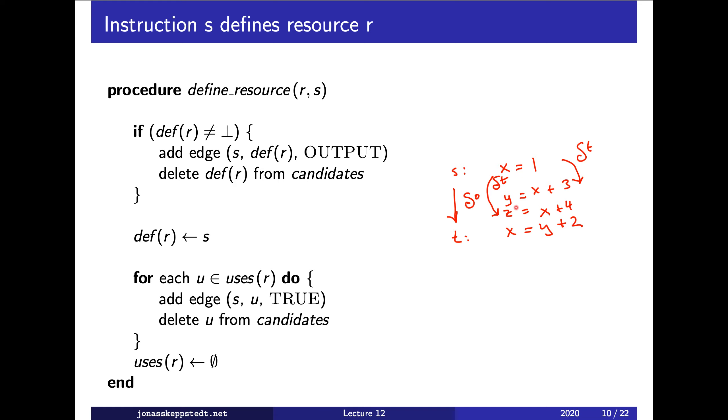And then we delete these two instructions from the candidate sets. And we also delete all the uses of x. Since there is no instruction—say we have x plus 3 here—that instruction does not use this definition. So there should be no known uses after this, when we are done with this one. So therefore we set it to the empty set.